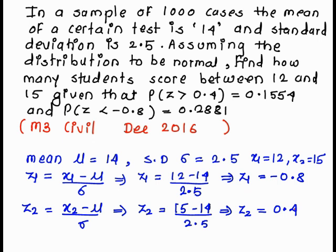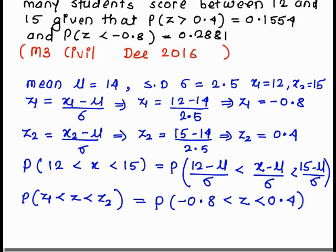Now we want to calculate the probability of x between 12 to 15. Subtracting mu and dividing by sigma, we get 12 minus mu upon sigma, that is z1, less than x minus mu upon sigma which is z, less than 15 minus mu upon sigma which is z2. The value of z1 is minus 0.8 and z2 is 0.4.